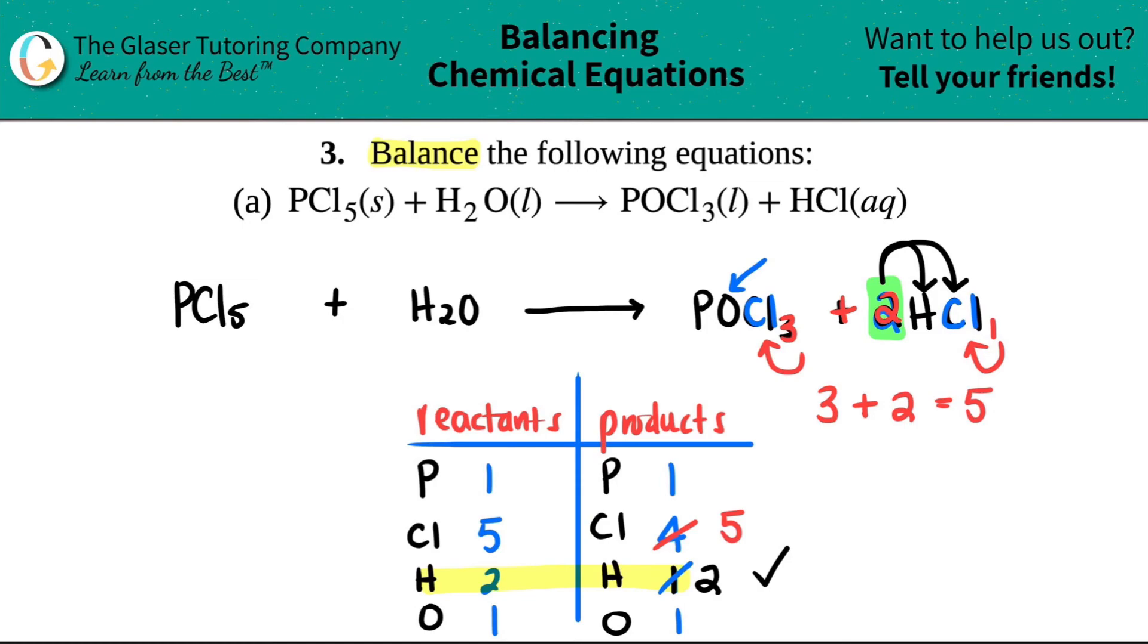And look, they are balanced—five and five. Even though I wasn't balancing for chlorine, I still balanced it out. All of our numbers now check out. One for one for phosphorus, that checks out. And one for one for oxygen. This was the only thing we had to do—stick a two right in front of the HCl. All the other coefficients are one.